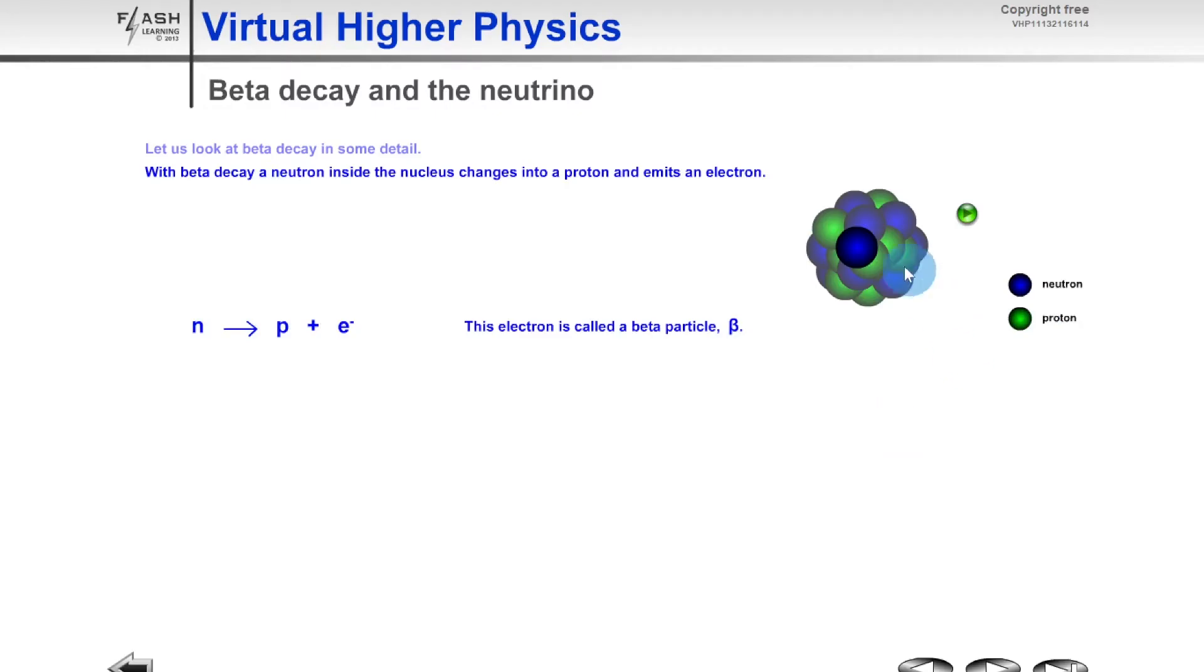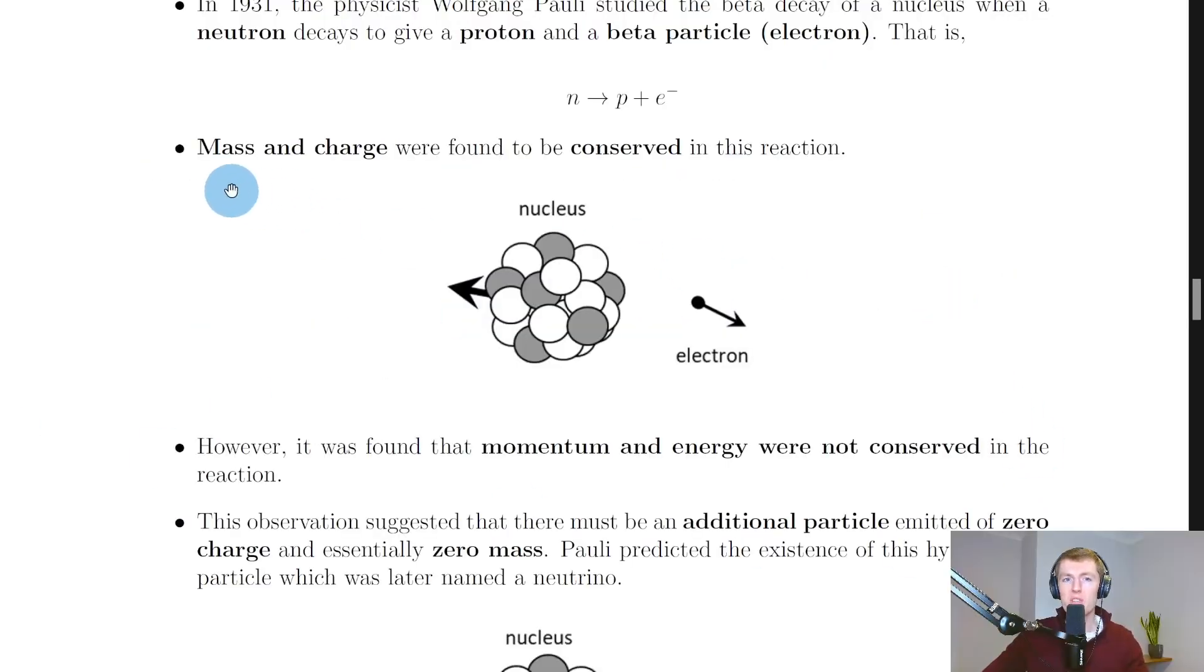Remember, we're saying one of the neutrons changes into a proton plus the electron that's fired off. This blue neutron changes into a green proton and we get this little fast-moving electron being fired off, i.e. our beta particle.